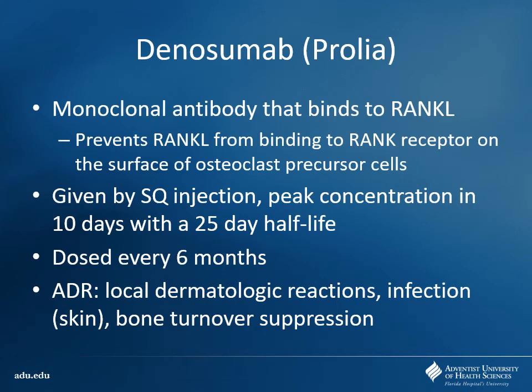Another option used less commonly is denosumab. Based on the '-mab' suffix, you already know it's a monoclonal antibody. It binds to a protein called RANKL — preventing the RANK receptor from being activated, which prevents osteoclast precursor cells from being generated. This would be used if bisphosphonate therapy failed and bone mineral density was still decreasing. It's dosed every six months. There is some risk of infection — typically skin infection at the injection site — and bone turnover suppression may lead to decreased bone integrity over time, since some bone recycling is a healthy process.